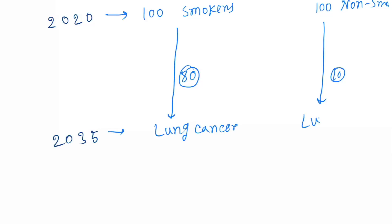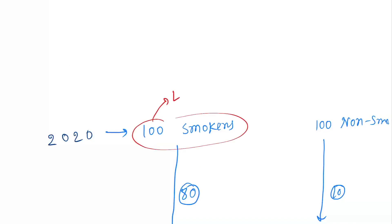Before going one by one, let's take an example. Suppose this is 2020 and this is 2035, 15 years later. Here we find 100 smokers and 100 non-smokers. In 2035, we see that 80 people developed lung cancer and here only 10 people developed lung cancer. These are exposed to the risk factor and these are non-exposed.